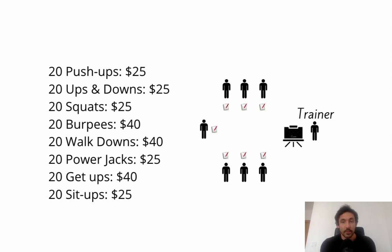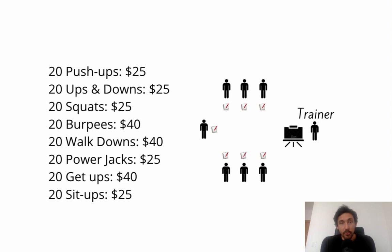If you're using it with your normal bootcamp classes, all you need to do is write the exercises on your whiteboard and you're good to go. Each player is going to need a pen and paper. You're going to need eight exercises — it's up to you what exercises you use. Give a lower dollar amount to the easier exercises and a higher dollar amount to the harder ones. For example, push-ups is quite easy so it's $25, and burpees is a difficult exercise so it's $40.